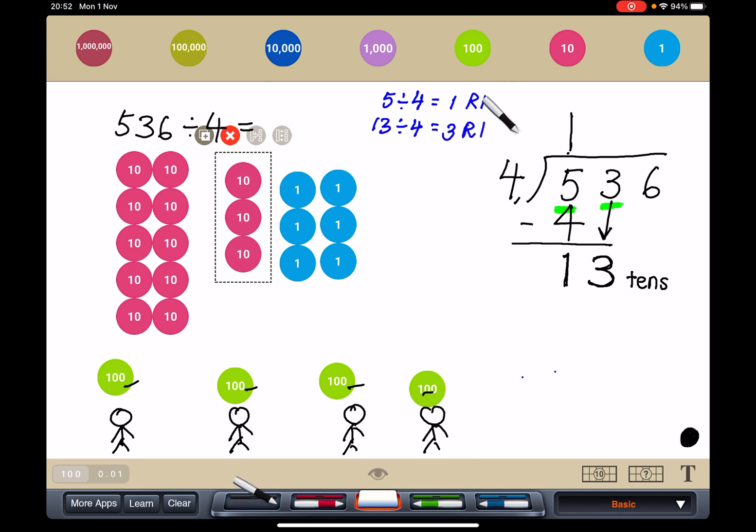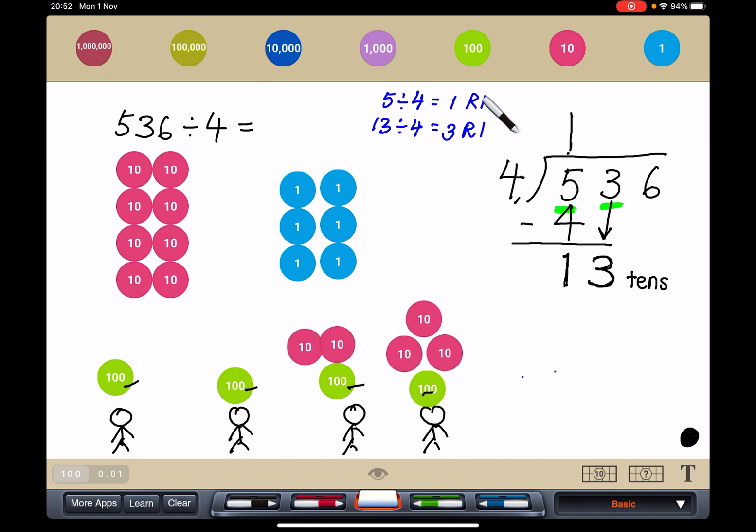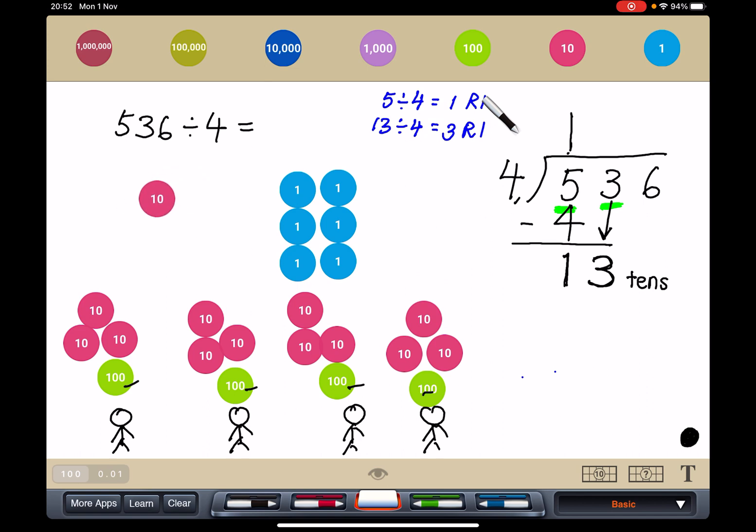So meaning I can give each of them 3. So I'm going to give this guy 3. 1, 2, 3. Next guy 3. 1, 2, 3. This guy 3 tens. And this guy 3 tens. Can you see? Then I have 1 remainder.